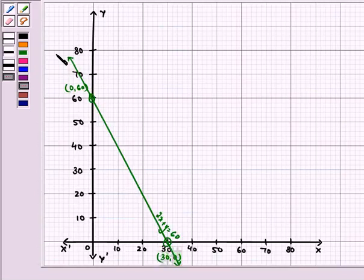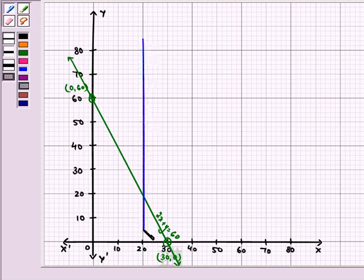Now we have plotted one line that is 2X plus Y is equal to 60. In the same way, we have X is equal to 20.